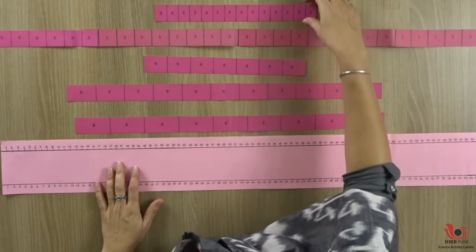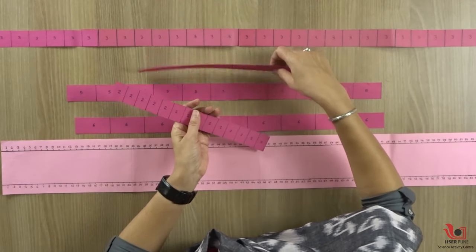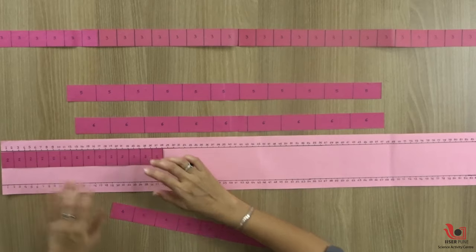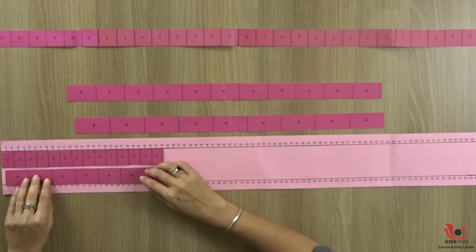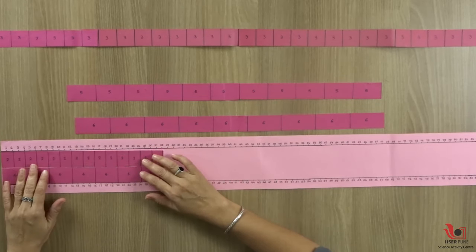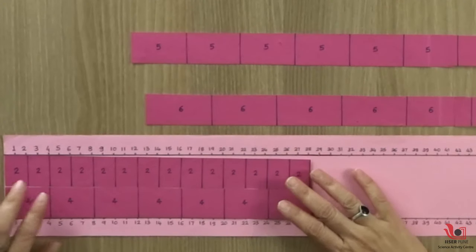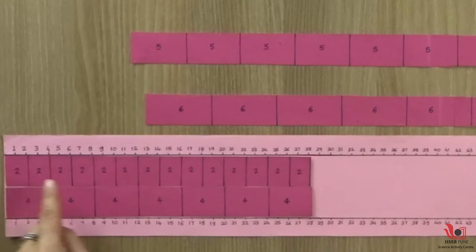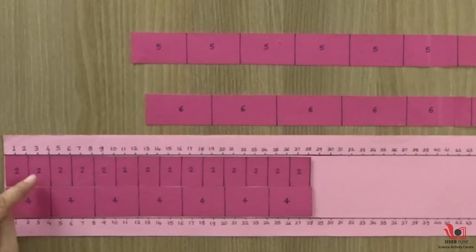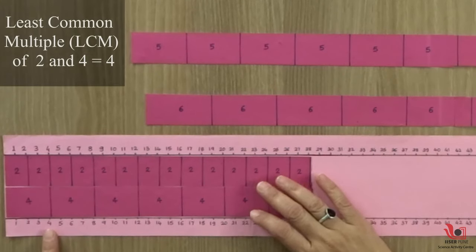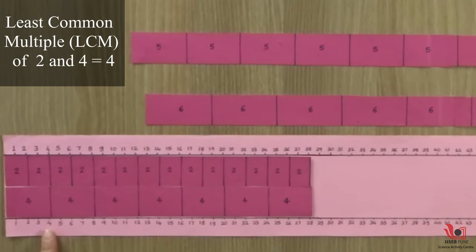If I have to find the LCM of 2 and 4, I place the strips in this way. Make sure that you align the left margin with the base strip. Now you can see various markings. Let us check where the lines of strip 2 and strip 4 coincide. That is at number 4. So 4 is the LCM of 2 and 4.